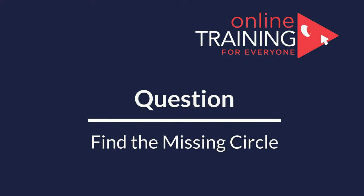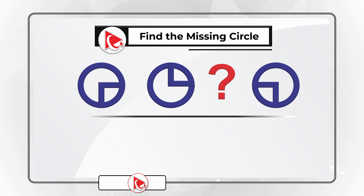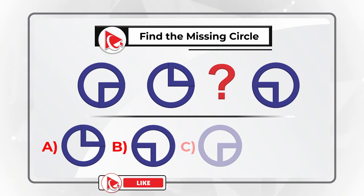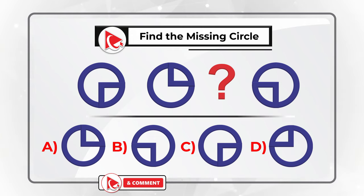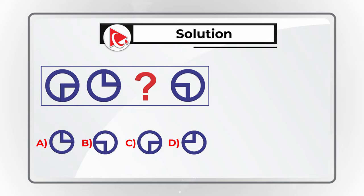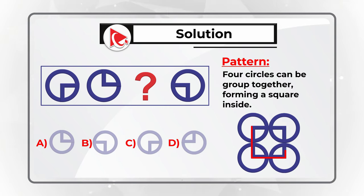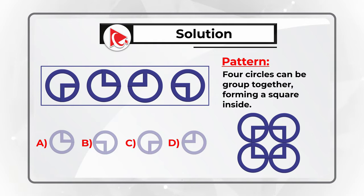Here is a very interesting problem which tests your analytical skills. You are presented with three circles and one circle is missing. You need to select the missing circle out of four possible choices: A, B, C, and D. As you might have noticed, there is another set of lines inside the circles, and four circles can be grouped together forming a square inside. So the correct choice here is choice D.